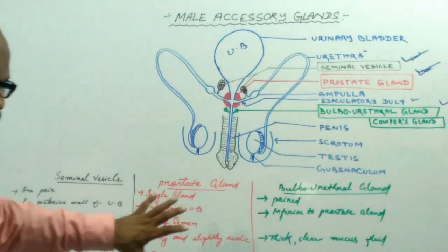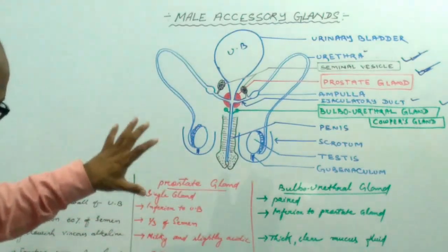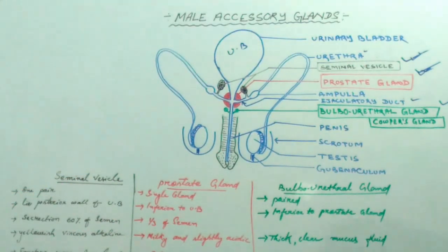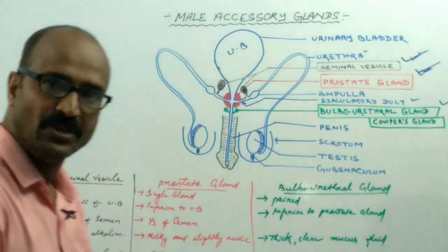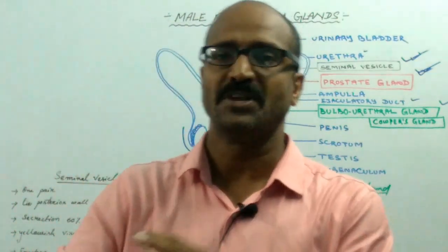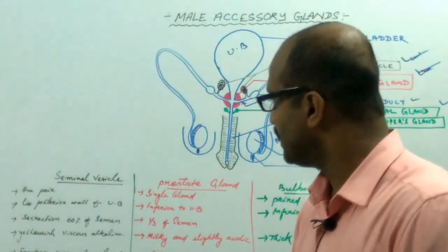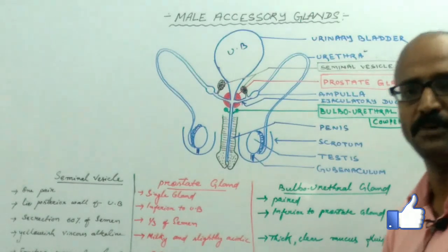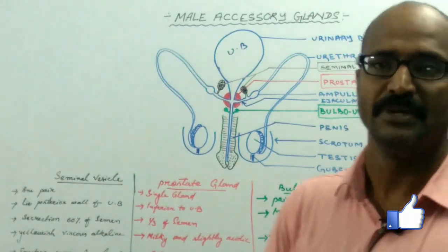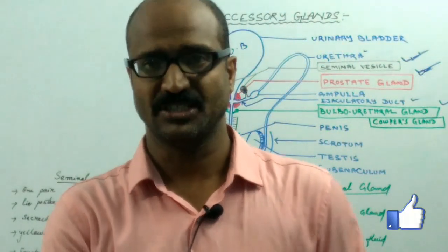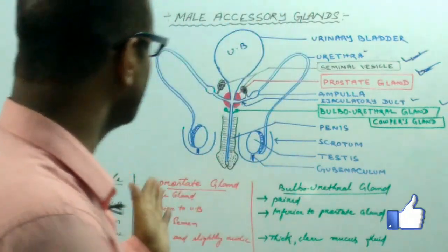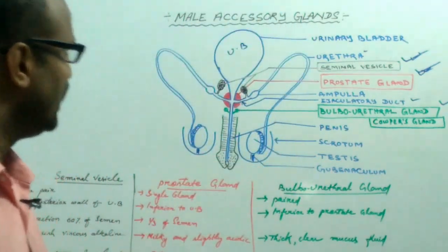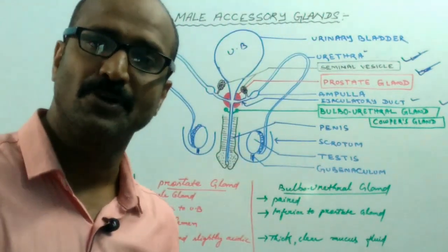The secretion of the prostate gland activates the sperm, and the secretion of the seminal vesicle provides nutrition to the semen. These are the different glands which help in the process of male reproduction, and that is why these are known as the male accessory glands. Thank you for watching.